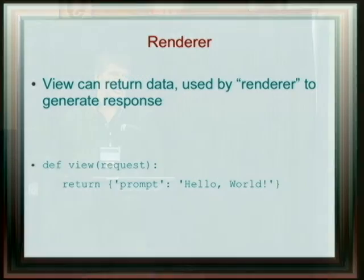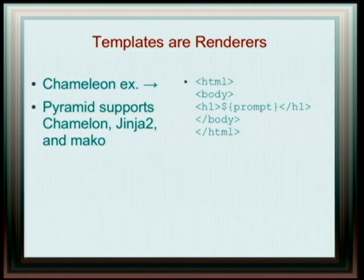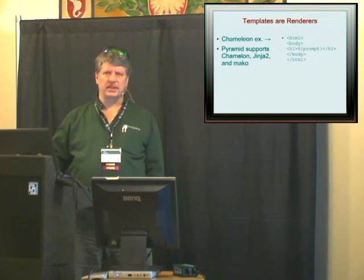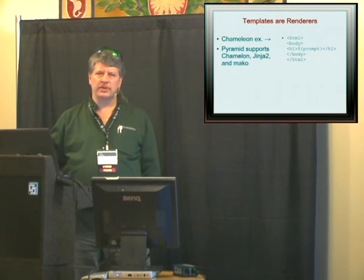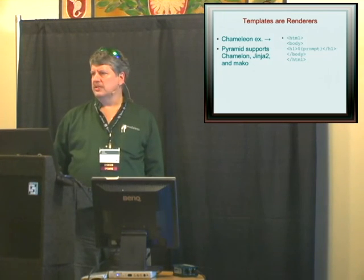There is a way to make an even simpler application: instead of returning a response object, you can give back some data — a Python dictionary with some information in it — and tell Pyramid to render that data using a renderer, which in this case could be a template. Whether it's a Chameleon template, Jinja, or Mako, the renderer's job is to take that dictionary and turn it into a response object. So your view code is no longer concerned with the details of the response — you don't care about content type or transfer coding headers. You just give back the data, and your renderer does the hard work.